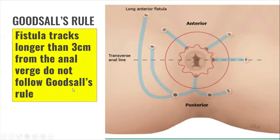Fistulas longer than 3 cm often have an internal opening in the posterior midline, regardless of the location of the external opening. Goodsall's rule is often quoted; however, it may not always be accurate.